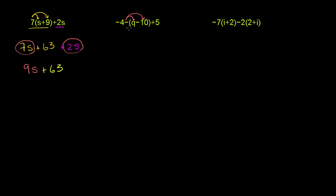Then this part right over here becomes negative 1 times q, or negative times q. So it's negative q. And negative 1 times negative 10 is positive 10, plus 10. So that's that part right over there. We still have this negative 4 out front and this plus 5 afterwards.